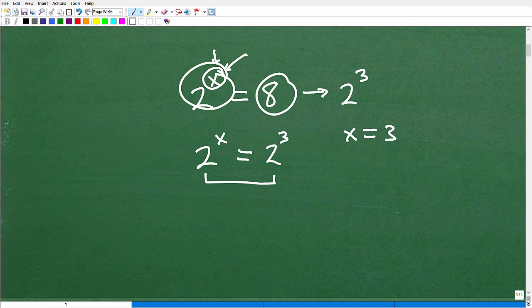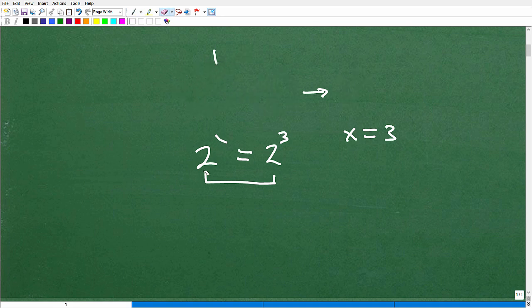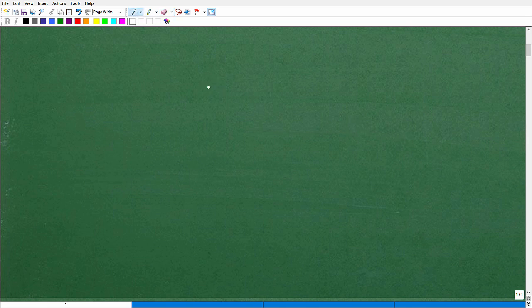So when x is 3 in this particular power, it solves this equation. But this particular exponential equation is super easy. Now, not everything is going to be that easy because as soon as I make the problem a little bit crazier, like this, 2 to the x power equals 10.